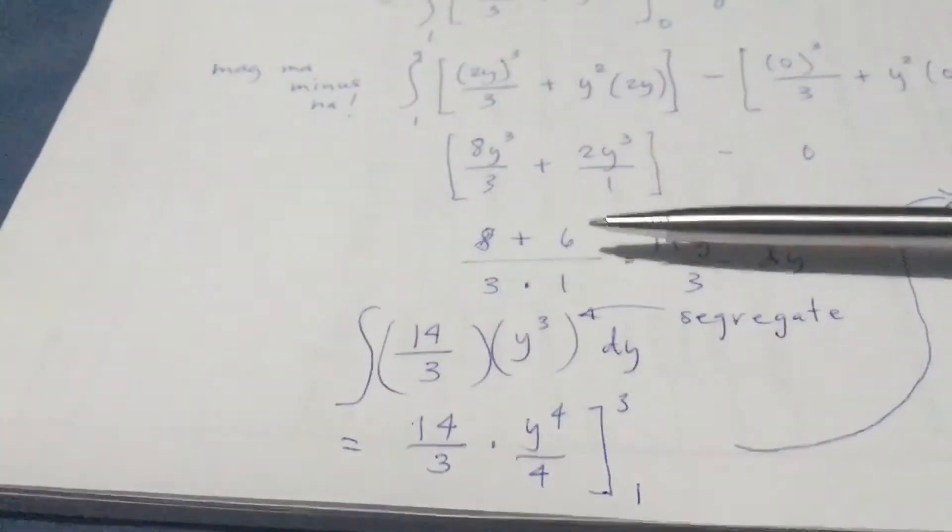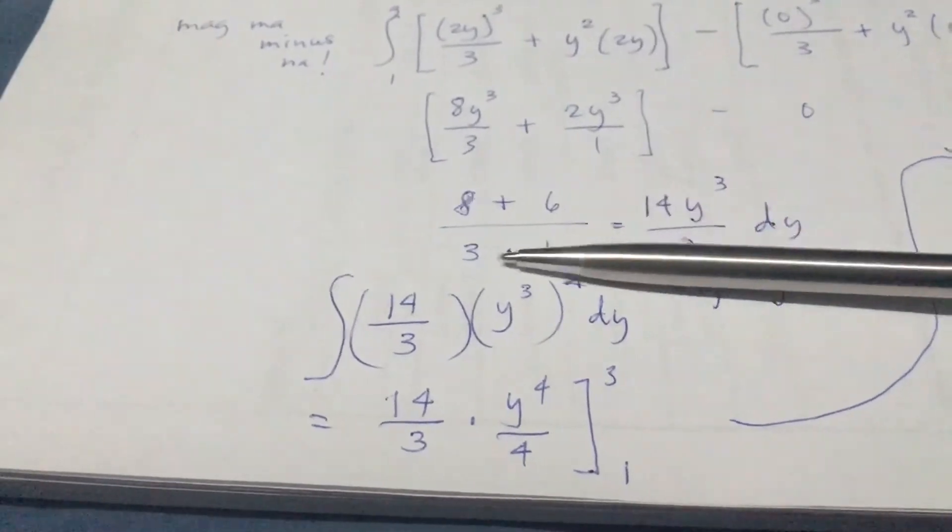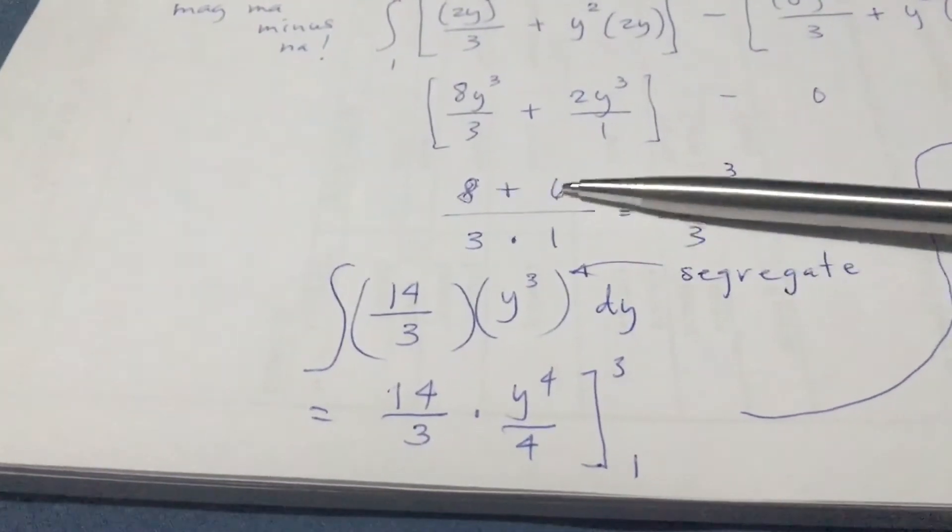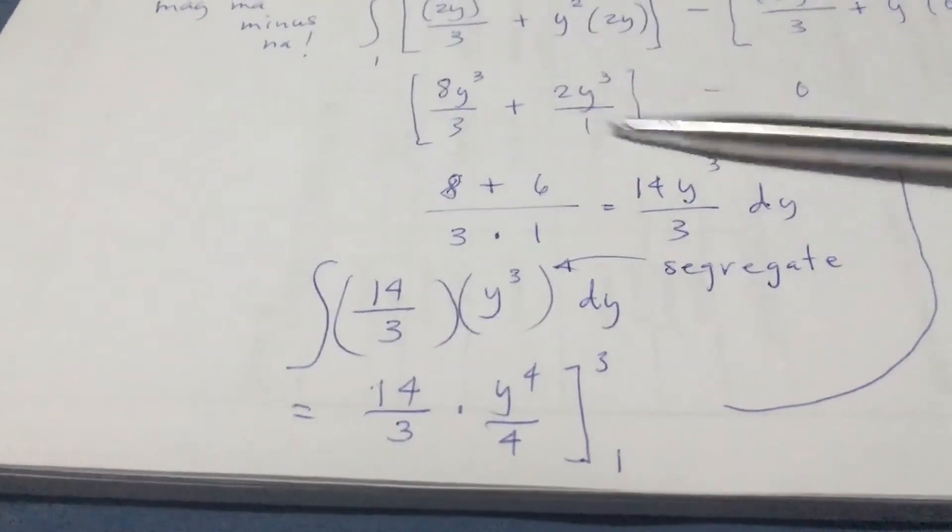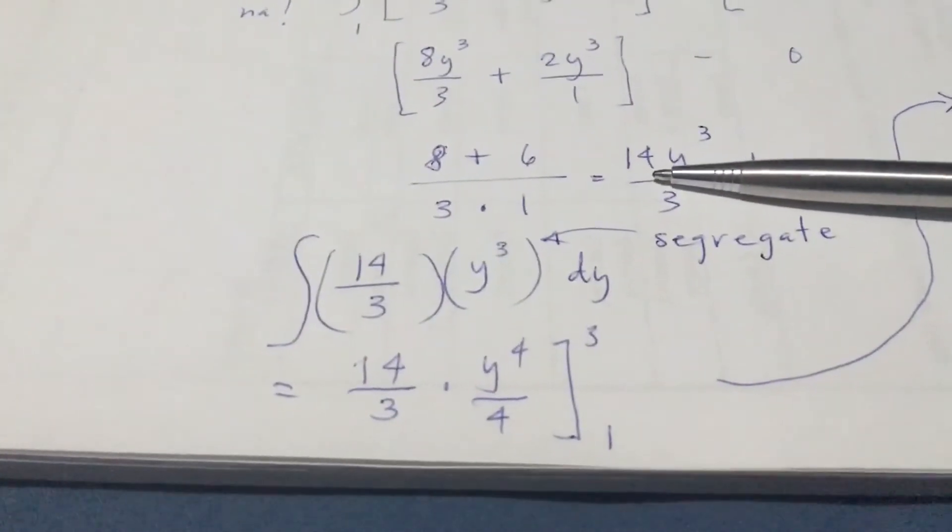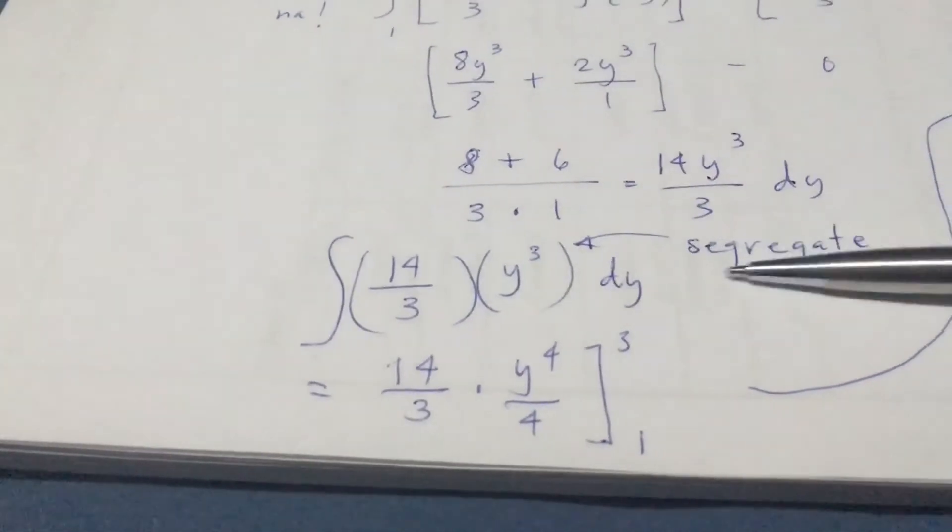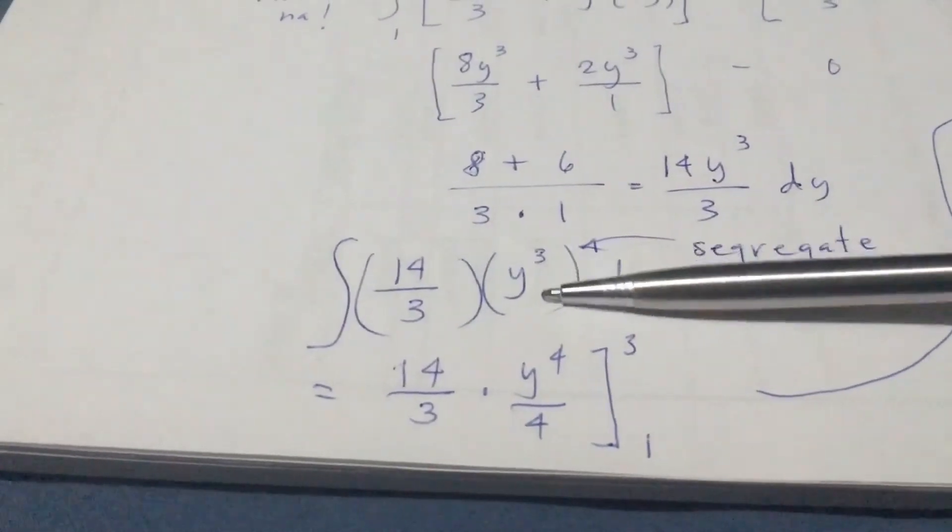And this would be 8 plus 6 over 3 times 1. That's the way how to add fractions. That will be 14, 14y raised to the third over 3. Segregate the y raised to the third power.